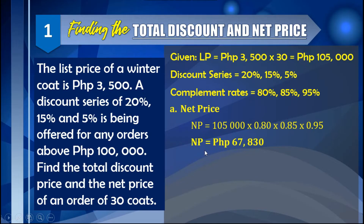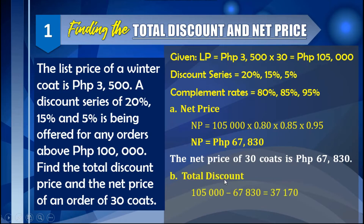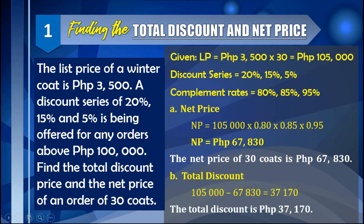The net price of the 30 coats is 67,830. For the total discount, since the list price is 105,000 and you only need to pay 67,830, we subtract these two values to get a total discount of 37,170.